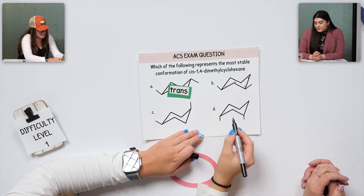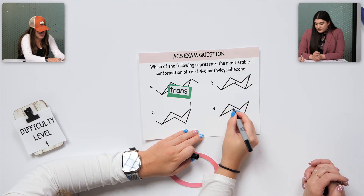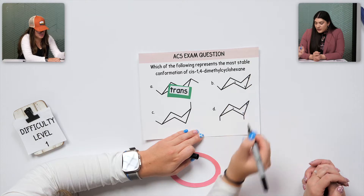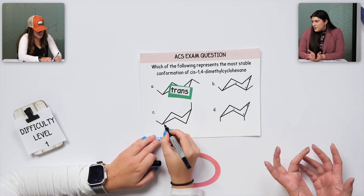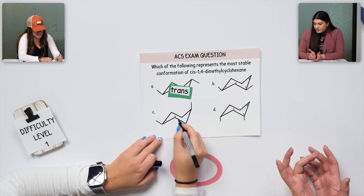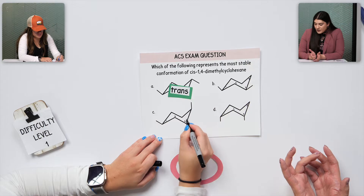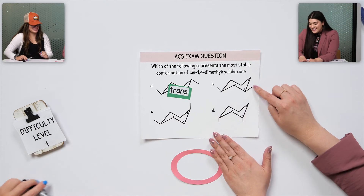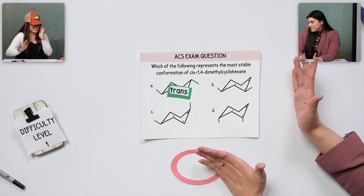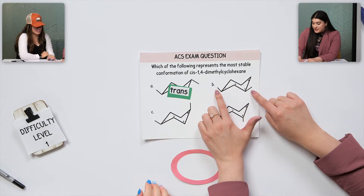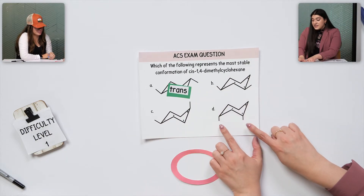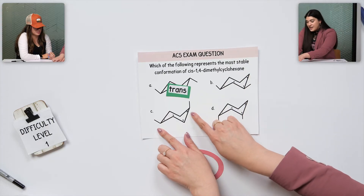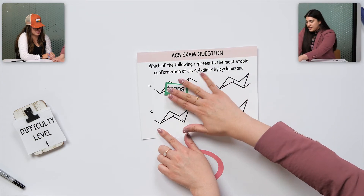Does the direction I go matter? That's mainly relevant with the chair flip — that's when it matters. So it'd be this one and this one. The main thing is just the numbering. You did see that this is cis because they're both going in the same direction. This is also cis — same direction, same direction. So we knew the other one was out because it's trans.